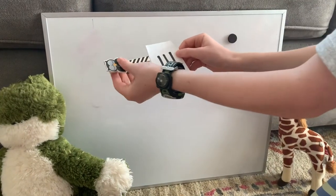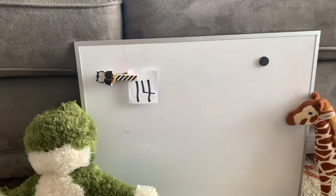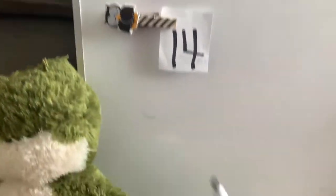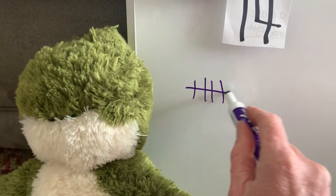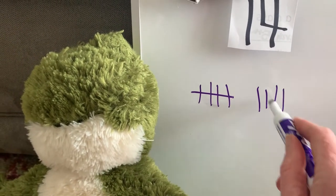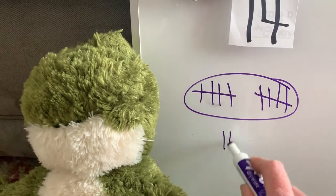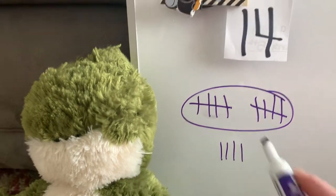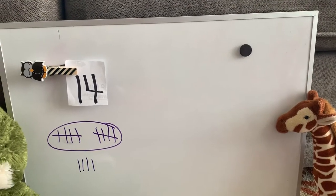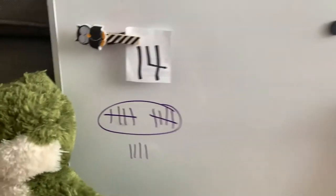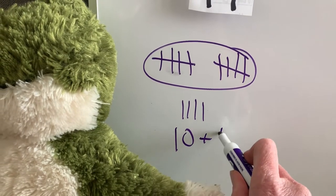Here's another number. What number is that? Fourteen. We're going to do tally marks again. One, two, three, four, five, six, seven, eight, nine, ten. Circle the ten. One, two, three, four — extra. And you can also do fourteen as ten plus four.